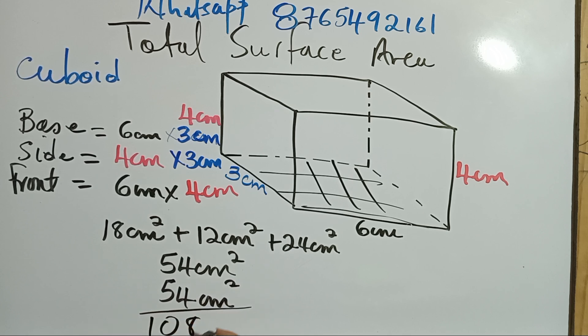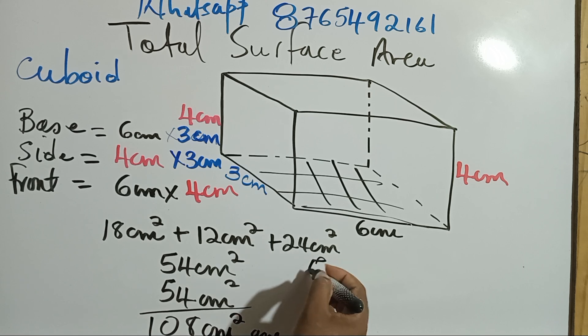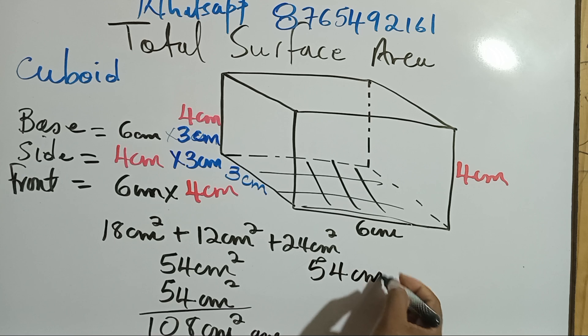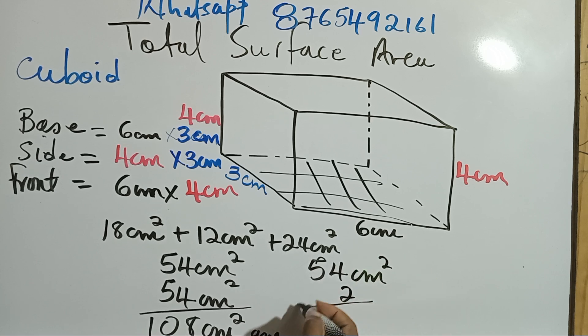So this would be 108 centimeters squared. Or, you can do like my students. Just multiply by two. All right. Two four is eight. Two five is ten. And that would give us our answer.